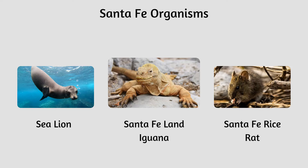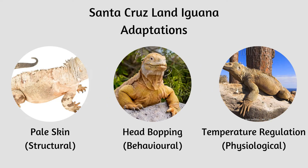Santa Fe iguanas are an interesting bunch. Being on a small volcanic island, these small creatures must adapt to the environment in order to survive. A structural adaptation the Santa Fe iguana has is that its skin is paler than other iguanas on the Galapagos. This helps them camouflage and blend into Santa Fe's landscape, making it harder for predators to spot them. A behavioral adaptation the Santa Fe iguana has is bobbing its head up and down to mark its territory and show aggression against predators. A physiological adaptation iguanas have picked up is regulating body temperature by basking in the sun. Being on such a small island is not easy, but it seems they've adapted very well.